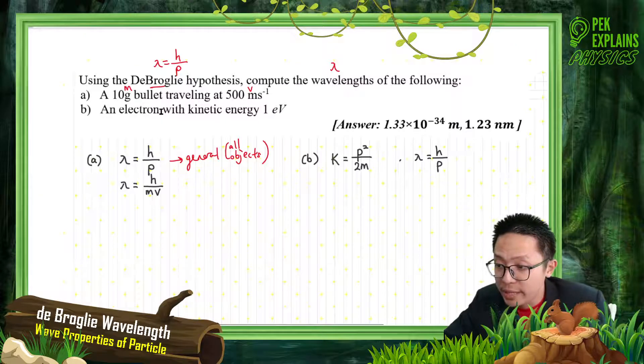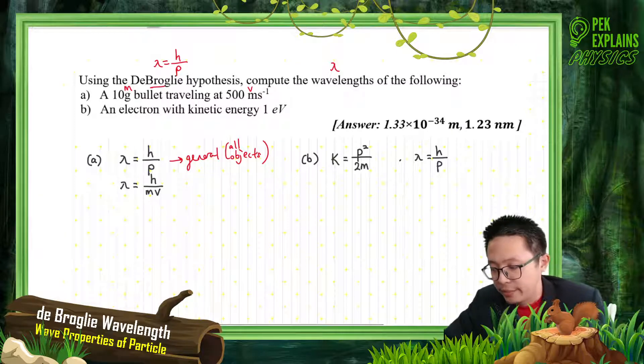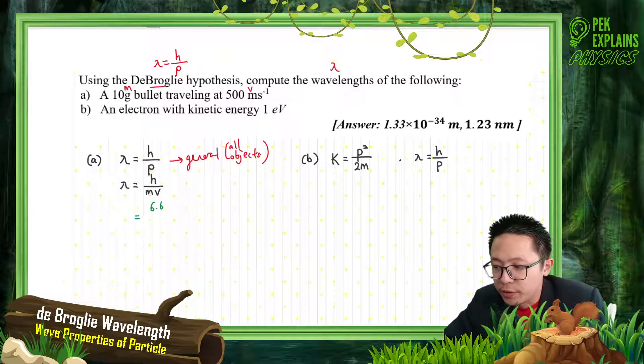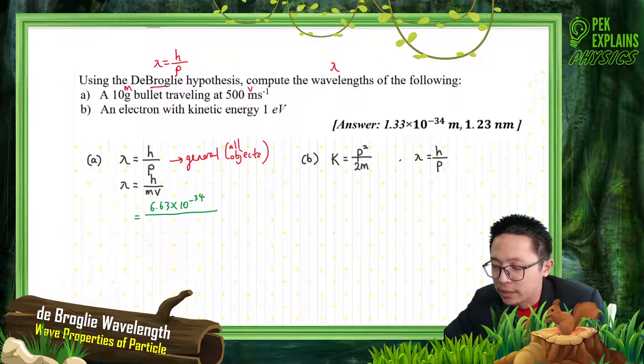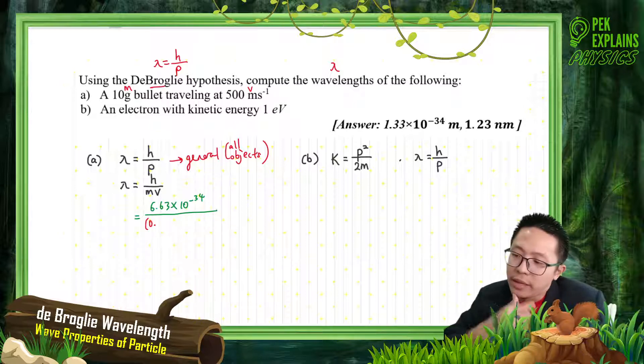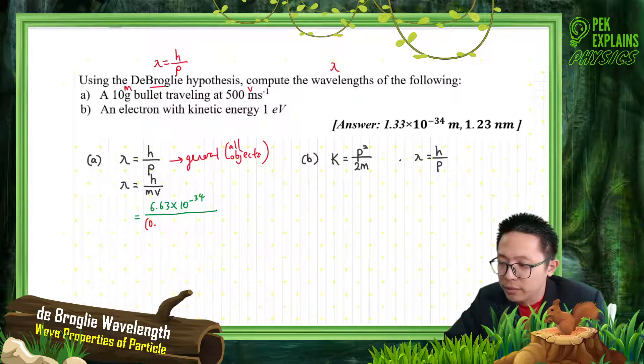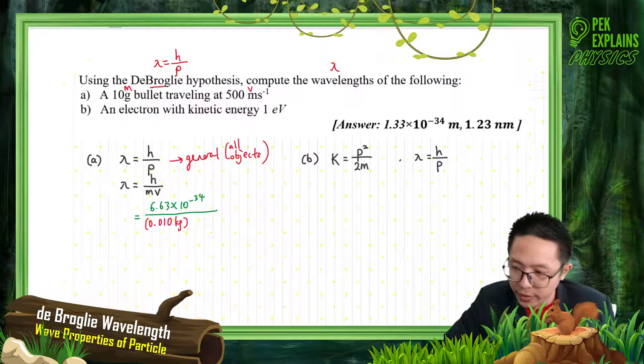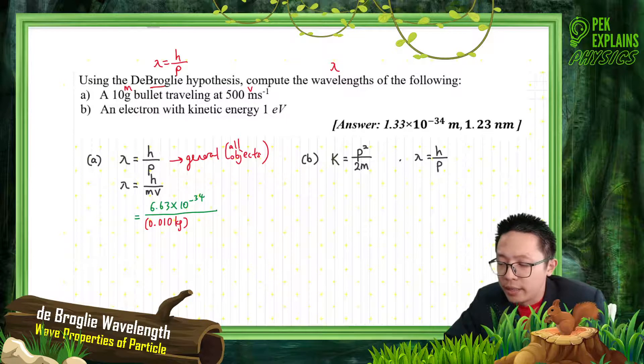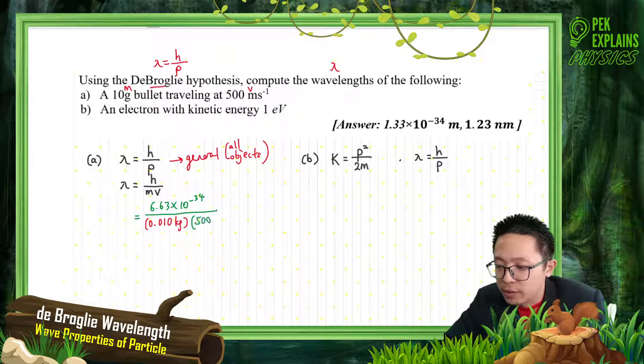Now we just use the mass and velocity, multiply and what do we get? H is 6.63 exponent negative 34 over the mass. Mass is 10 grams - you must change to kilograms. 10 grams divided by 1000 is 0.010 kilograms. Then 500 meters per second already in SI unit.